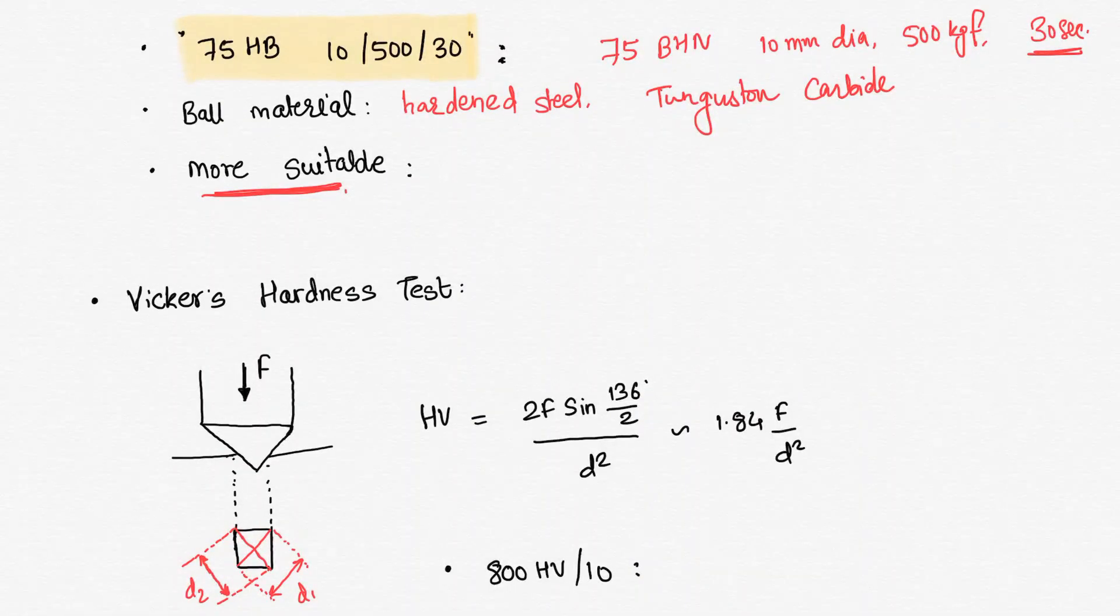It's a standard property is that the pyramid's opposite faces will have an angle of 136 degrees. 136 degrees is angle between opposite faces. That is meaning basically, if I see in this figure, this angle will be 136 degrees.